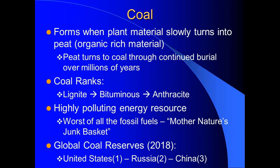Not all coal is the same — we have coal ranks based on how much energy we can get out. The lowest rank is lignite. The intermediate rank, from which we can get more energy, is bituminous. The highest energy rank is anthracite. We love to burn anthracite because we get the most energy out of it, but it's fairly rare because it requires incredibly high pressures and temperatures to form. All fossil fuels are highly polluting, but coal is the worst — it's dirtier than oil and natural gas. We call it Mother Nature's junk basket: anything Mother Nature doesn't want, it puts in coal, and once we burn it, we release those toxic substances.